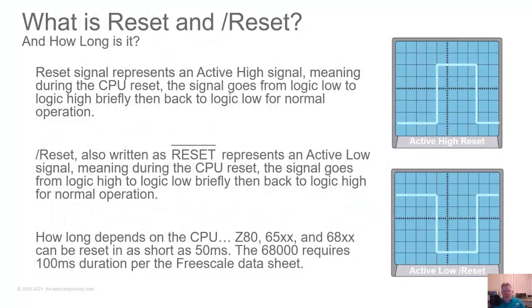How long of a reset signal do we need, and what is this about reset versus slash-reset or reset with a bar over top of it? That just determines what type of reset signal you have. If you have simply reset with no lines or bars, that means it's an active high signal — the reset line is normally low, zero volts or below 0.8 volts, a logic zero — and it pulses high, over two-point-something volts, for a specific amount of time and then drops back down to normal.